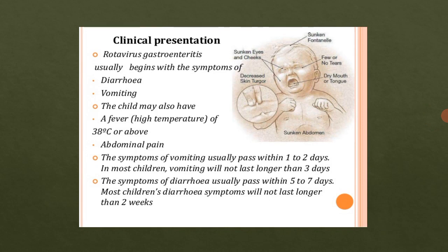Look at the picture. Starting with the head — the sunken fontanelle. The skin will be loosened, and there will be few or no tears. These are the clinical symptoms that will be present if a baby is infected with rotavirus. The mouth and tongue will also be dry. Then, sunken eyes and cheeks. There is a loss of water, and therefore these symptoms appear.